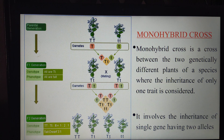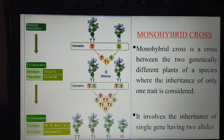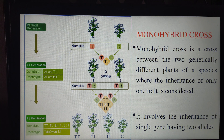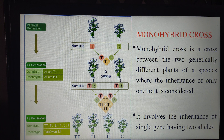Moreover, monohybrid cross involves the inheritance of a single gene having two alleles. In monohybrid cross, we are discussing about only one character. Each and every character is controlled by a gene, so one character is controlled by one gene. Each gene has different versions — a minimum of two versions — and those versions are called alleles. So in monohybrid cross, we study the inheritance of a single gene involving two alleles.